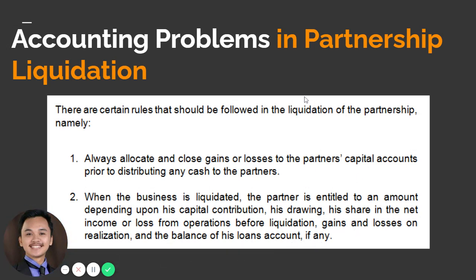Our focus this time is lump sum liquidation. That means all your non-cash assets will be converted into cash in a one-time setting — all of your non-cash assets will be sold at once. Unlike installment liquidation, wherein all your non-cash assets will be sold on a staggered or piecemeal basis. Piecemeal liquidation of a partnership will be discussed in our next video lecture.